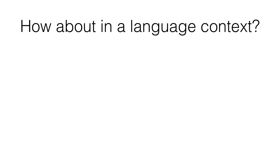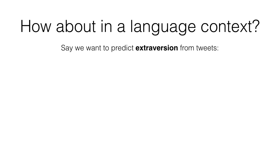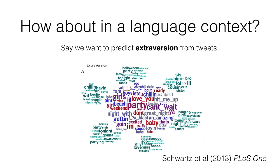So what does overfitting look like when your independent variables or features are based on language? Say we want to predict a personality trait like extraversion from someone's social media language. We know that this should be possible since we can measure language that is correlated with this trait. In our PLOS ONE paper, we showed that the words, multi-word expressions, and topic clusters are positively correlated with the big five extraversion trait. People took an inventory questionnaire to measure extraversion, and we correlated that inventory with their relative usage of these words, phrases, and topics.